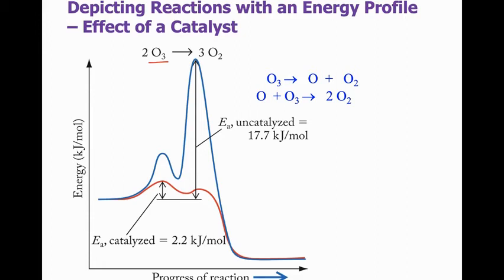So we can see from our blue curve that the first step is a lower activation energy than the second step. And the second step is our uncatalyzed activation energy of 17.7 kilojoules per mole. So it takes quite a bit of energy for this oxygen and ozone to get together, make that bond, and break an oxygen-oxygen bond in the ozone molecule. So if we add this up, overall we get two ozone molecules goes to three oxygen molecules.